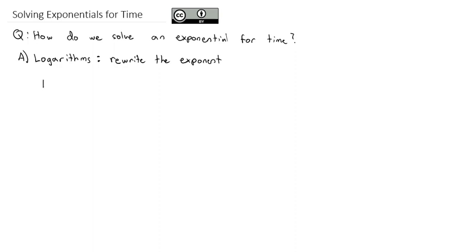The idea is we'll have some base raised to some exponent that's going to be equal to some answer. What we can do is rewrite this exponential problem b^x = a as a log function, where the base becomes a little subscript and the answer goes inside the log, and it's going to be equal to the exponent. This gets the exponent out of the exponent so we can actually solve for x.